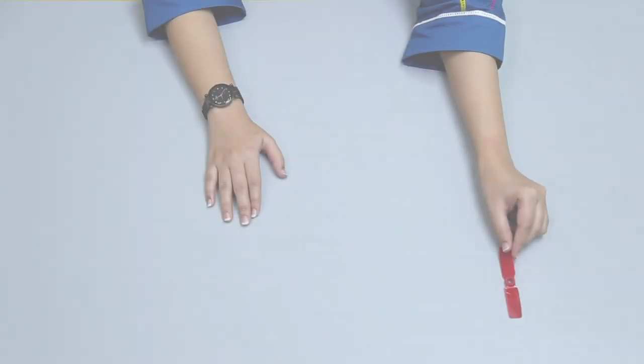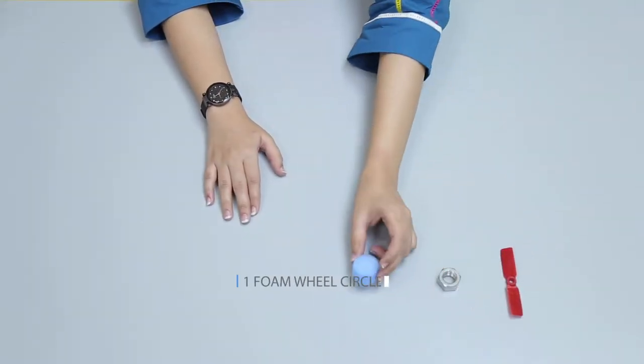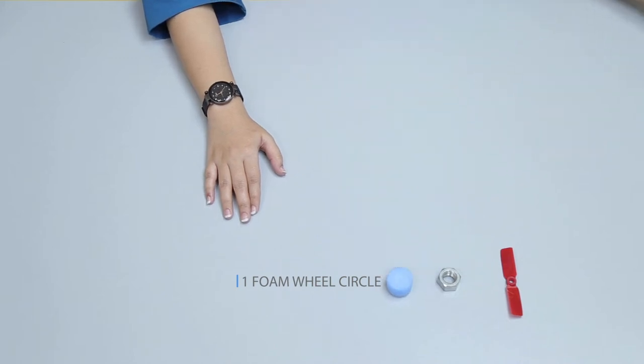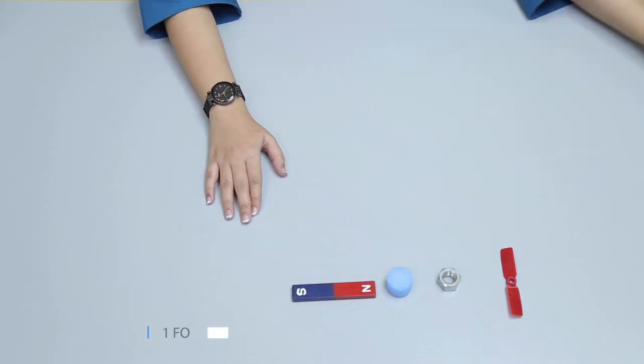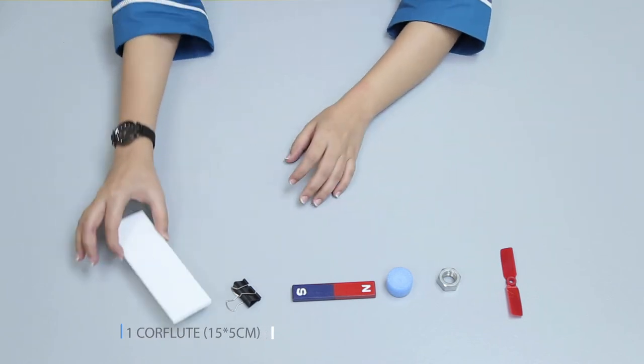For this project we need one propeller, one metal nut, one foam wheel circle, one magnet, one fold back clip, and one core flute, 15 by 5 centimeters.